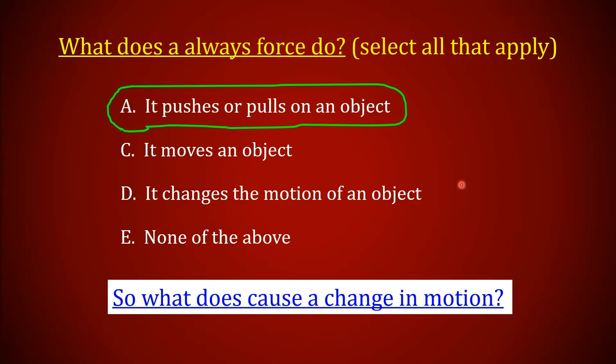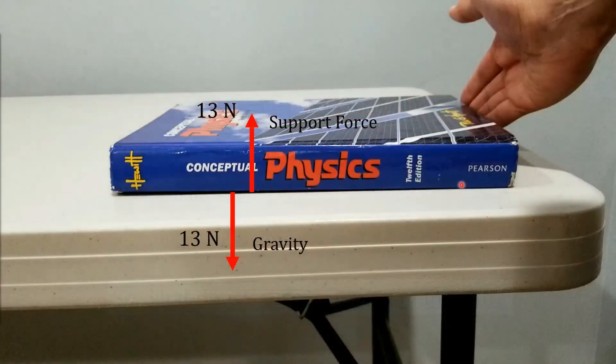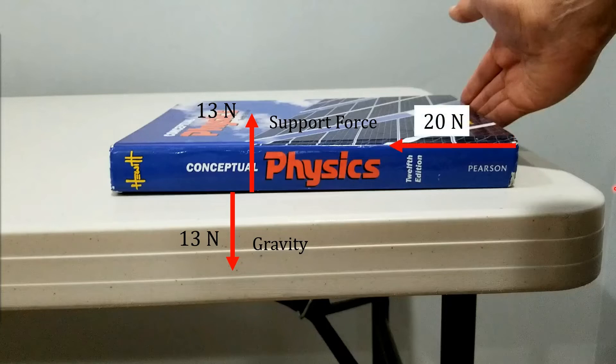So that brings another question: what does change motion? Let's modify our previous example a little bit. In this case, we still have gravity, of course, pulling down with 13 newtons. I have the support force back at 13 newtons because I'm no longer pushing down. I'm pushing horizontally to the left with the same 20 newtons force that I'd used before.